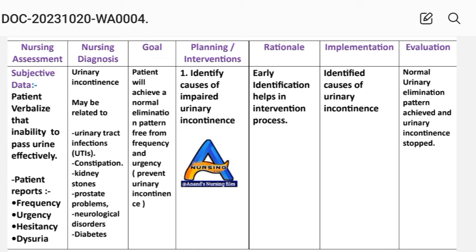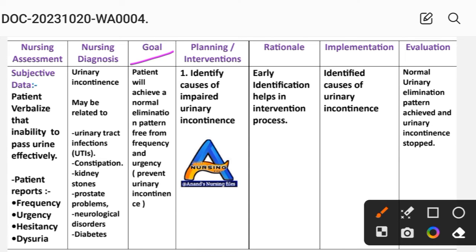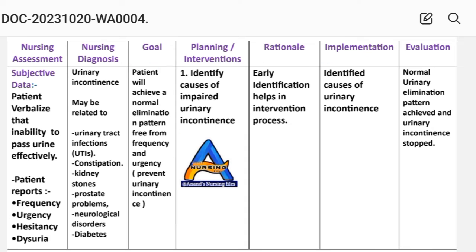Next is the goal: the patient will achieve a normal elimination pattern free from frequency and urgency to prevent urinary incontinence. The goal is to achieve different nursing interventions for the patient. The rationale provides the specific reason behind each intervention, and implementation is the acting phase of the nursing care plan.